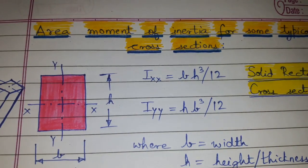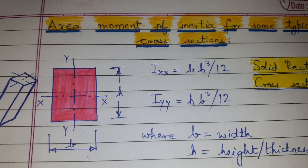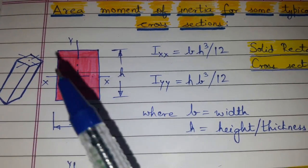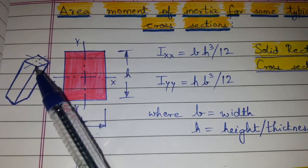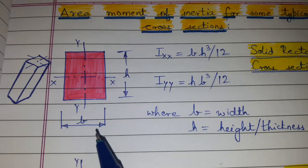Topic of discussion is area moment of inertia for some typical cross-sections. First, solid rectangular cross-section. This is a cross-section of a column, this is b, that is the width.